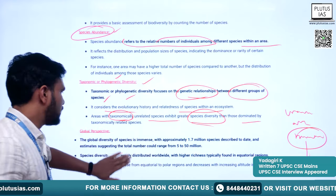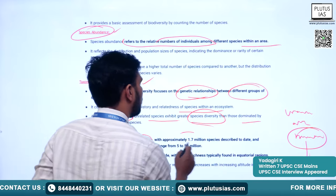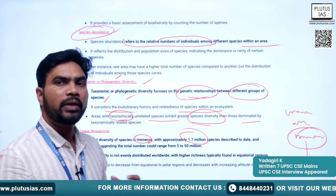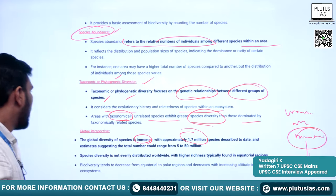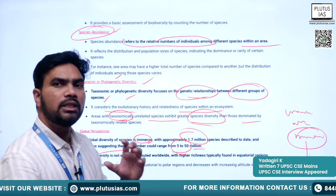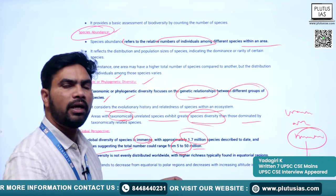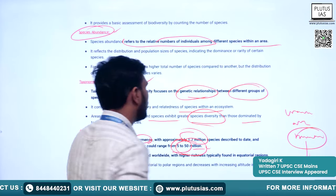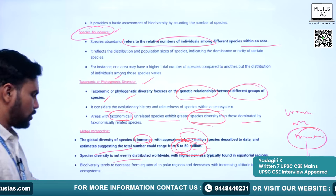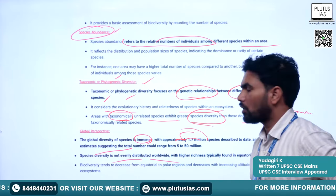At the global level, approximately 1.7 million species have been identified and described to date, with estimates suggesting the total could range from 5 to 50 million. Species diversity is not evenly distributed worldwide — equatorial regions show higher richness, and biodiversity tends to decrease from equatorial to polar regions.